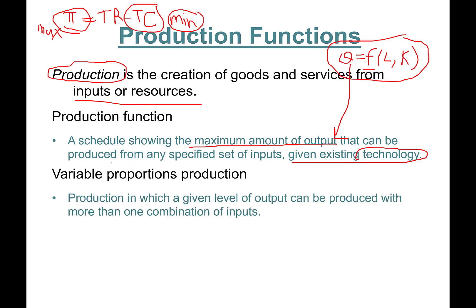Let's talk about different types of production. Variable proportions of production means production in which a given level of output Q can be produced with more than one combination of inputs. For instance, at a grocery store right now we have self-checkout areas. In the past we used to have one worker, one cashier, one cash register. Now you can get similar work done with one labor overseeing ten cash registers.